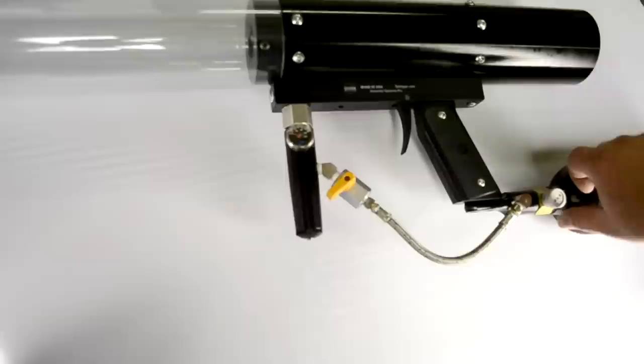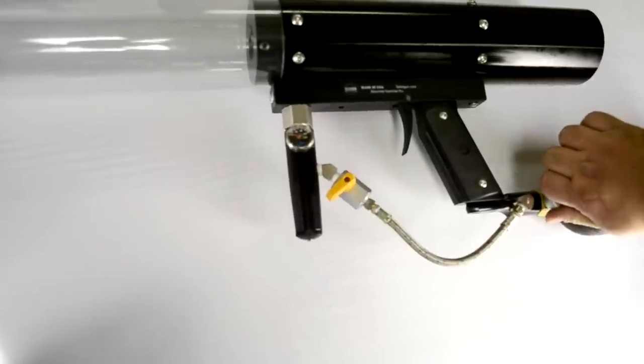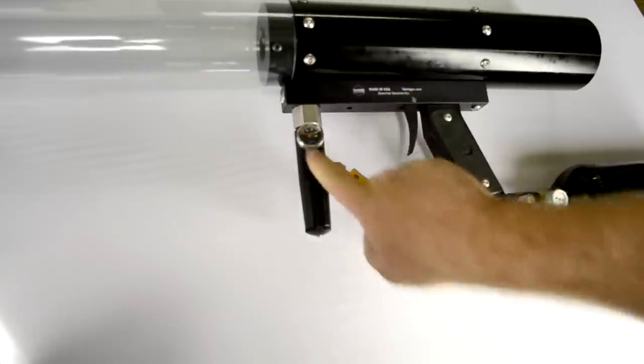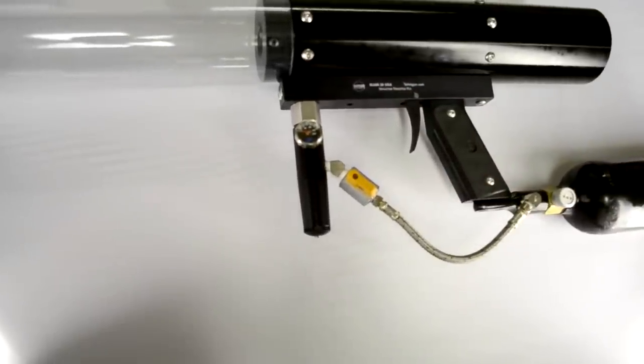Then we'll turn the valve on the tank to the on position and the valve on the gun in the on position. You'll notice there should be zero psi on the gauge.